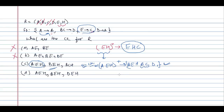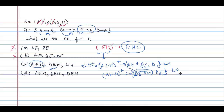Now let us take BEH closure. B, E, H are trivial. With B alone we cannot determine anything new. With E we can determine C. With BC we can determine D. With D we can determine A. Therefore we can determine everything — BEH is a candidate key and also a super key.